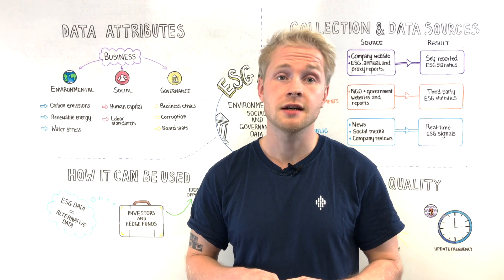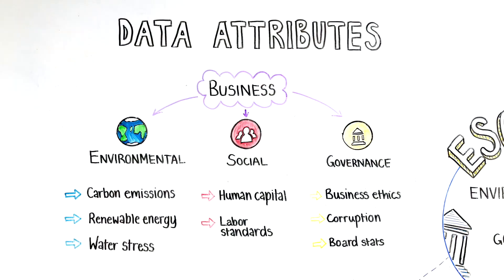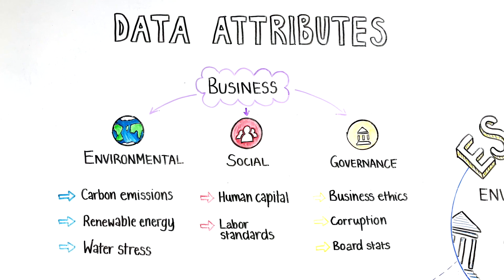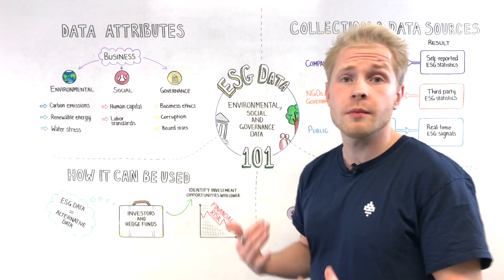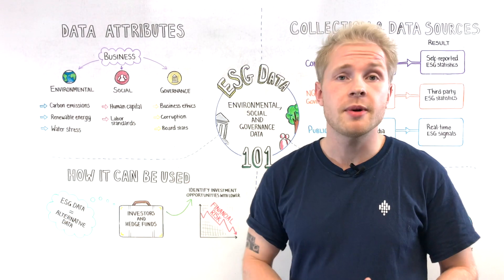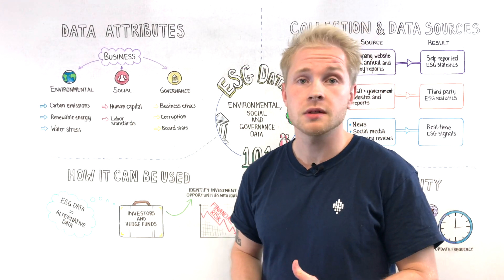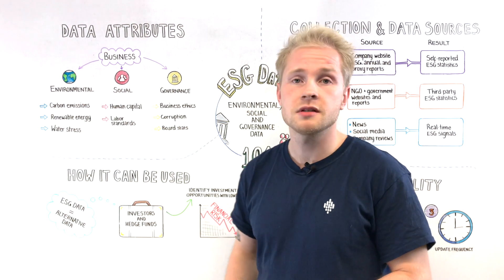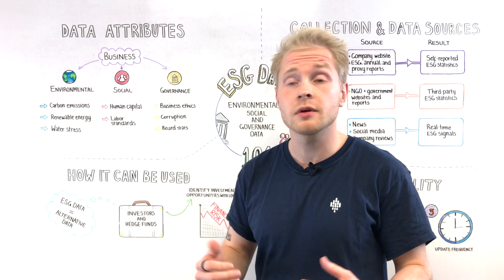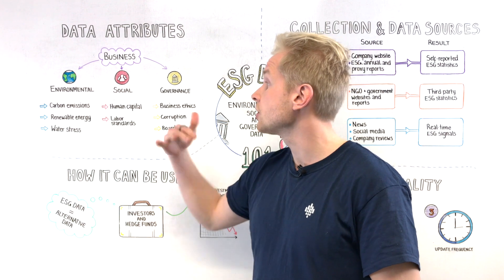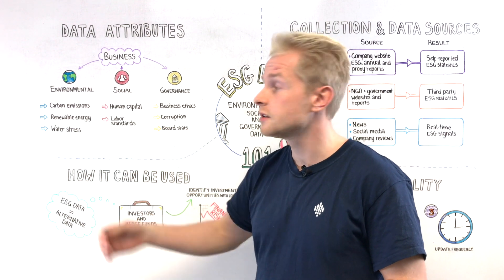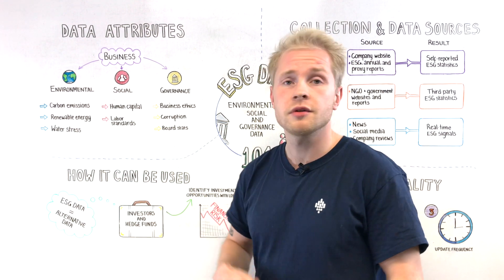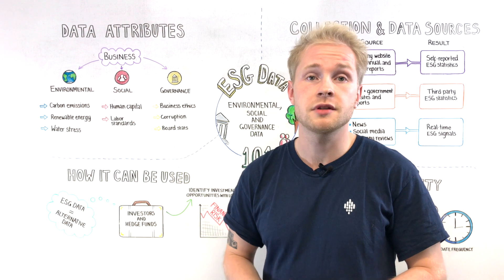What is ESG data? Environmental, social, and governance data is information on a business and its impact on its surroundings. Environmental aspects of a given business, for example, can be understood through data on its carbon emissions, the use of their renewable energy sources, or their water stress levels that they're producing.